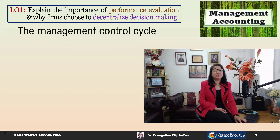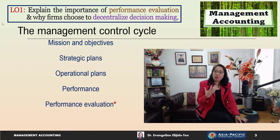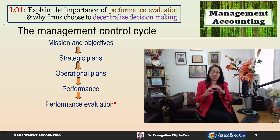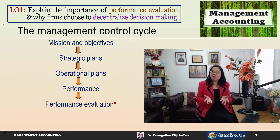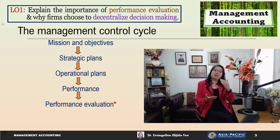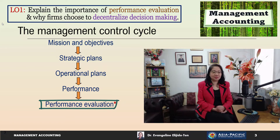In Learning Objective 1, we will explain the importance of performance evaluation and why firms choose to decentralize decision making. I'd like to introduce you to the management control cycle. Most business organizations will have mission and objectives, which form the basis of their strategic plans — the long-term plans. These plans will be the basis of their operational plans, which may cover monthly, quarterly, and up to a year. These plans will then be implemented and we will have the performance.